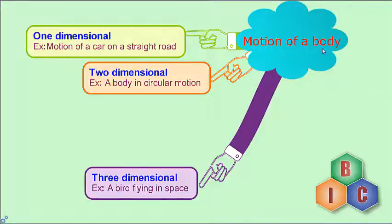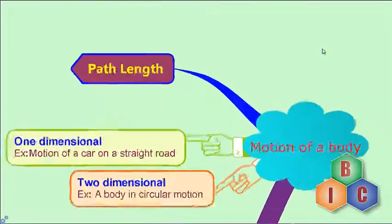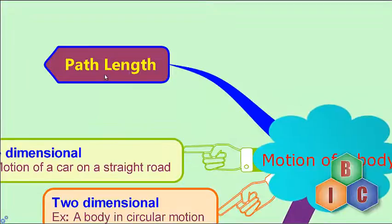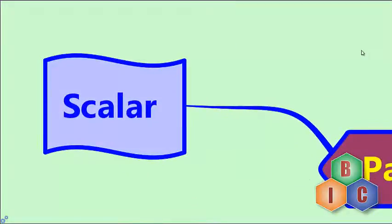Motion of a body is described by six physical characteristics or quantities. The first one is path length — it is the actual distance between the initial and final position of the body during the motion. A body travels from point A to point B, and the total distance covered by the body is the path length. It is a scalar quantity.